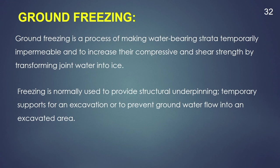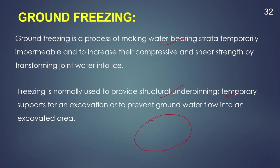The next method is the ground freezing technique. In ground freezing, the water present inside a soil will be frozen using different techniques. Ground freezing is a process of making water-bearing strata temporarily impermeable and increasing their compressive and shear strength by transforming the pore water into ice. This is generally used to provide structural underpinning, temporary support for an excavation, or to prevent groundwater flow into an excavated area. Sometimes it is also used to prevent migration of contaminants — the soil around a contaminant can be frozen so that the contaminant cannot move from one point to another.